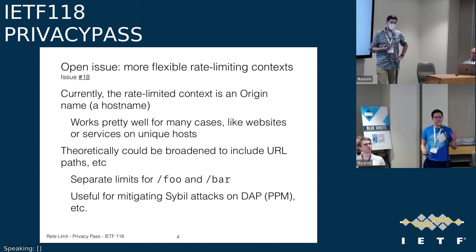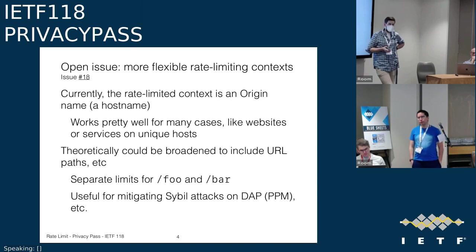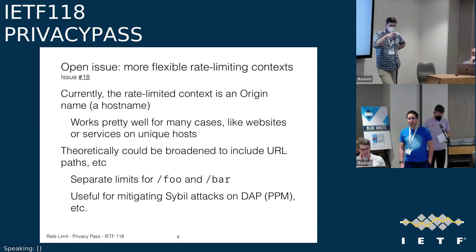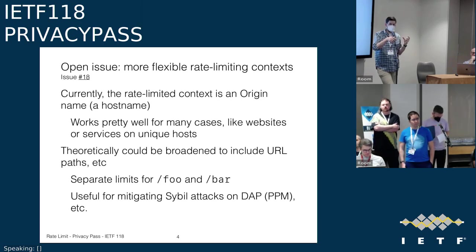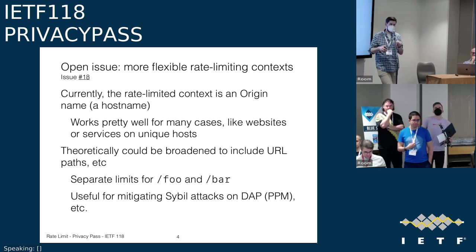If the list includes example.com and Cloudflare CDN and the issuer accepts both as valid for the rate limiting context, the client has free reign to choose which one to use. Essentially under the same key, the client could have rate-limited state for either of those two origin infos, allowing them to double their rate limit — essentially amplifying their ability to get tokens. The issuer could reject origin infos it doesn't expect to be used, but the client needs to know which ones are valid for the issuance protocol.